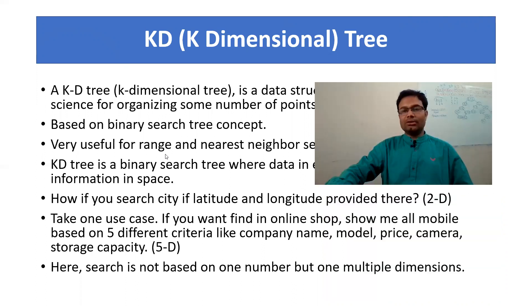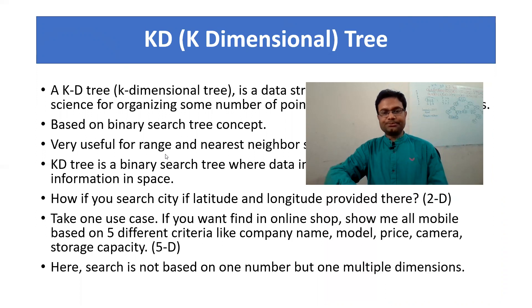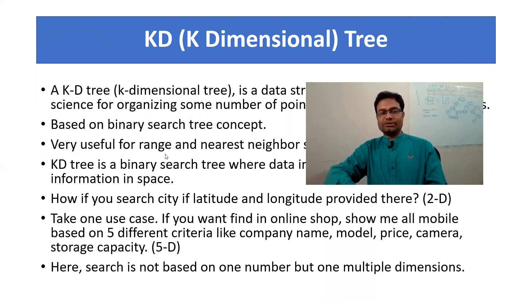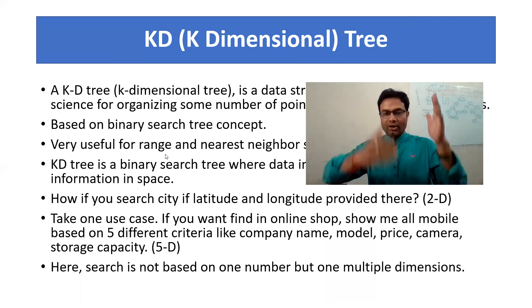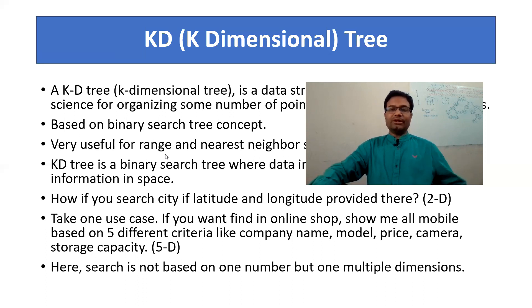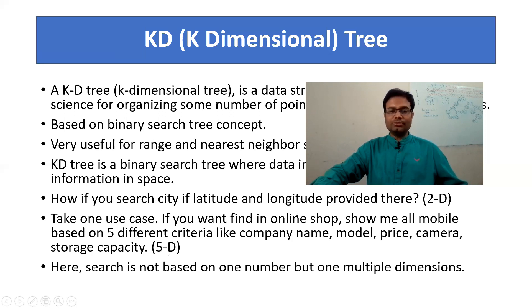Take another example: online shopping is very famous nowadays. You are looking for a mobile phone and your criteria has 5 parts: company name should be xyz, model name should be abcd, price, camera, and storage capacity. So you have 5 criteria. Now based on these 5 criteria, how does the online shopping site show all the mobiles which match this criteria? They must have used the KD Tree. In this example, all 5 criteria means K is 5, so that is called a 5D Tree. That's why it is very useful to know.